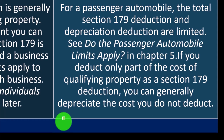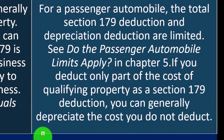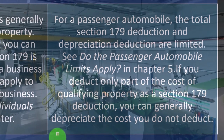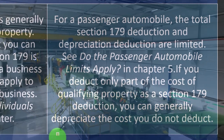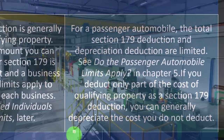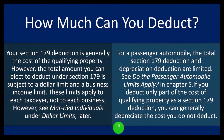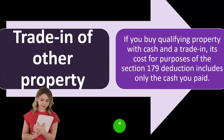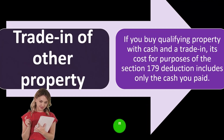If you deduct only part of the cost of qualifying property as a Section 179 deduction, you can generally depreciate the cost you didn't deduct. So if you're limited in the amount you can deduct in year one, you may still be able to depreciate the remainder normally — often using MACRS depreciation, for example — depending on the type of property.